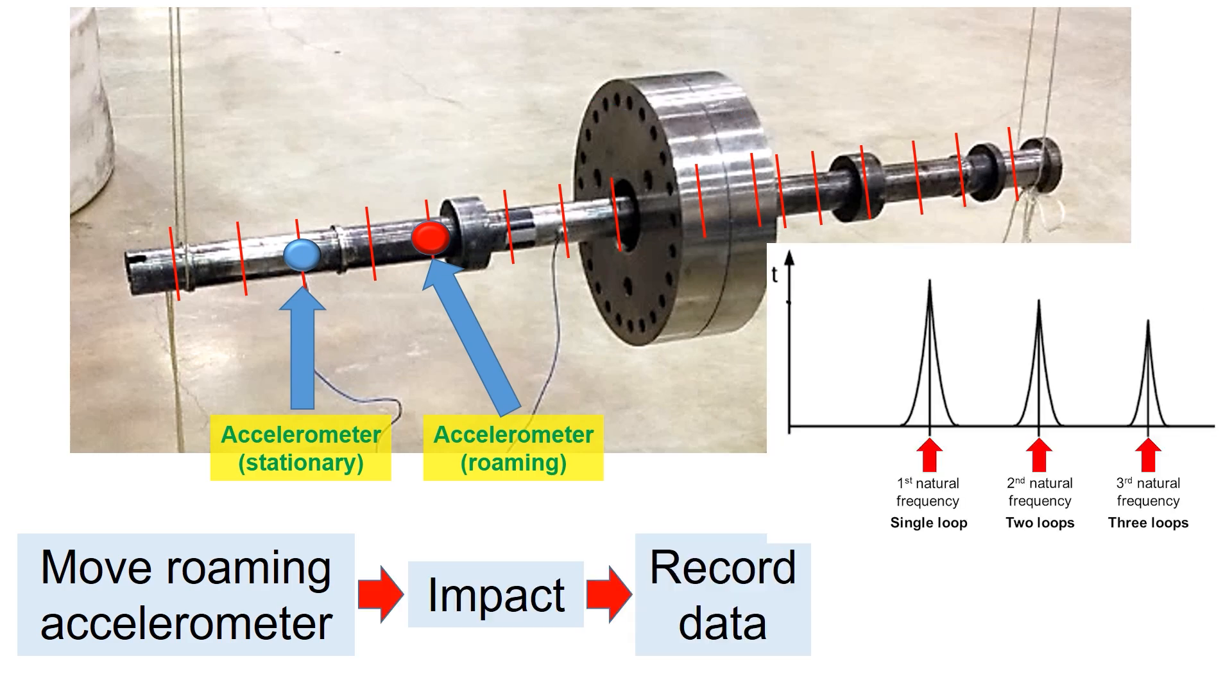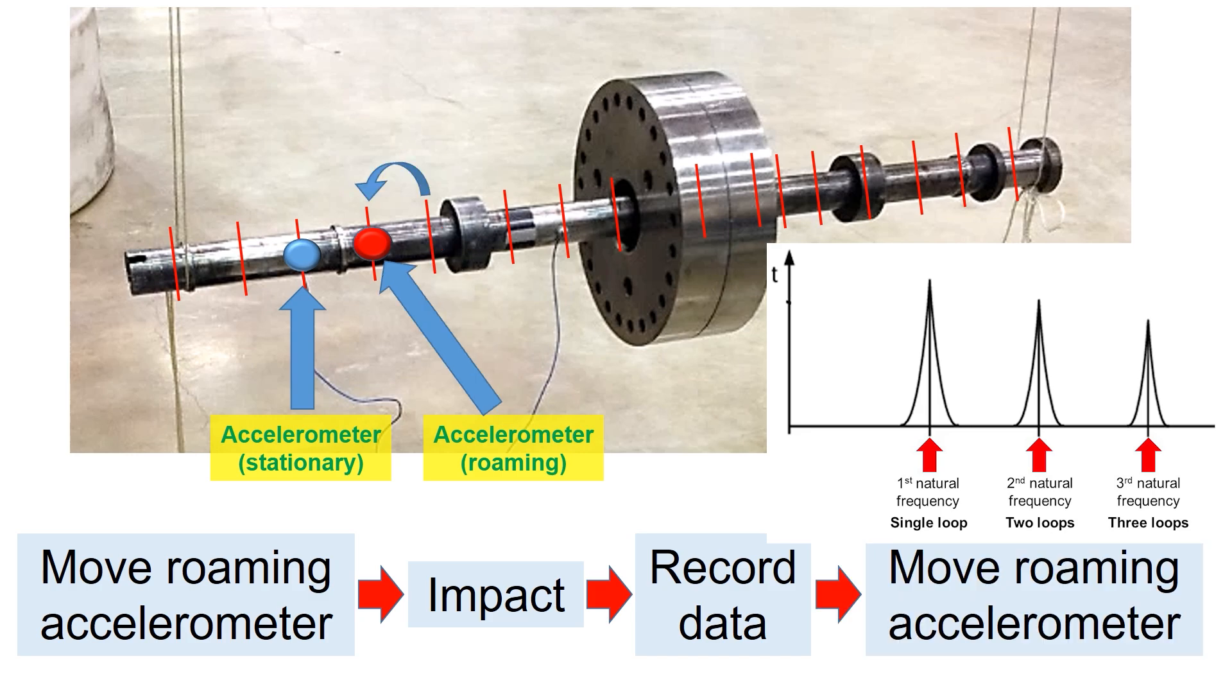Move the roaming accelerometer to the next location, then repeat this process until you measure all the data through the whole rotor.